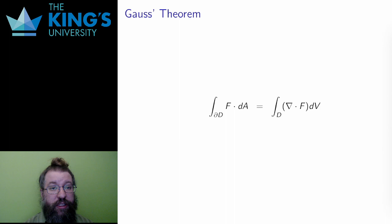The second main result is Gauss's theorem. Again, let f be a vector field in R3, and here d is a solid region in R3, a three-dimensional area, like the inside of a sphere or a cube.